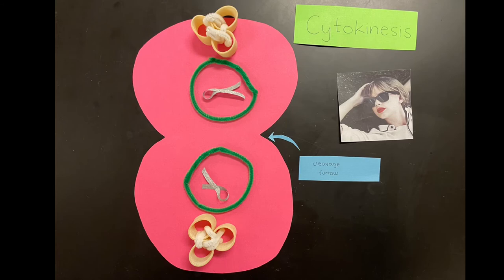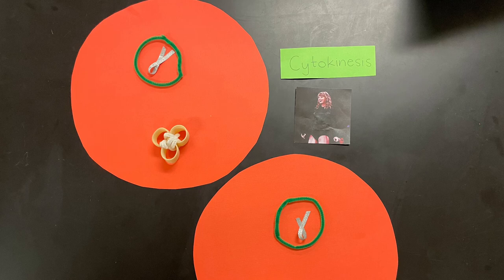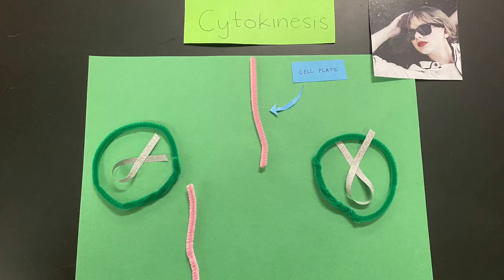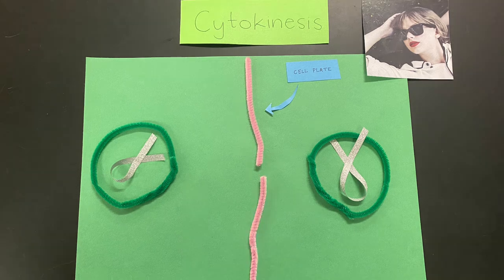Cytokinesis is the division of the cytoplasm at the end of mitosis, specifically during and after telophase. In animal cells, a cleavage furrow forms — the pinched-in part — and pinches the cell until two separate animal cells with separate cell membranes are created. Cytokinesis in plant cells causes a cell plate to form, which gradually creates a cell wall dividing the cytoplasm and creating a new plant cell. Unlike animal cells, plant cells will always remain in the spot where they originally divided, while animal cells have the ability to move around.